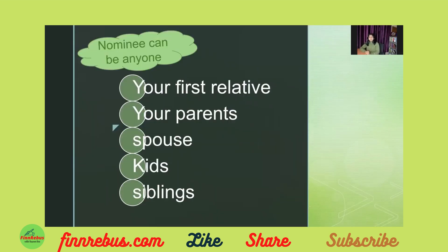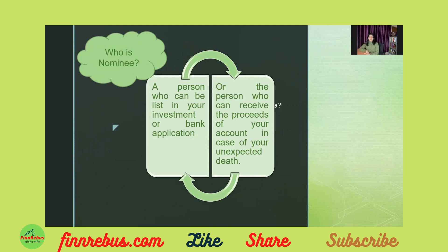A Nominee can be a first relative — parents, spouse, kids, or siblings. Anyone can be a Nominee. A Nominee is the person whom you have listed in your investments and financial instruments, who will work on your wealth, your proceeds, to claim and retrieve your money when a mishappening occurs.